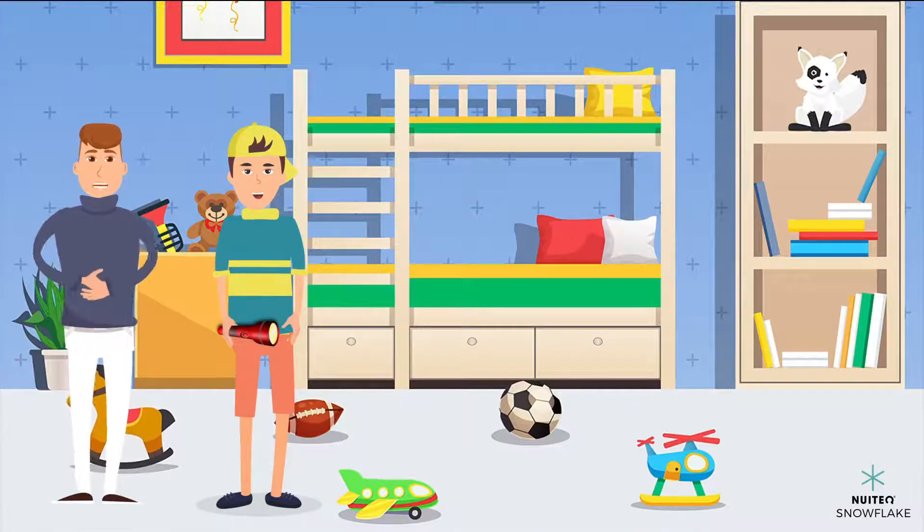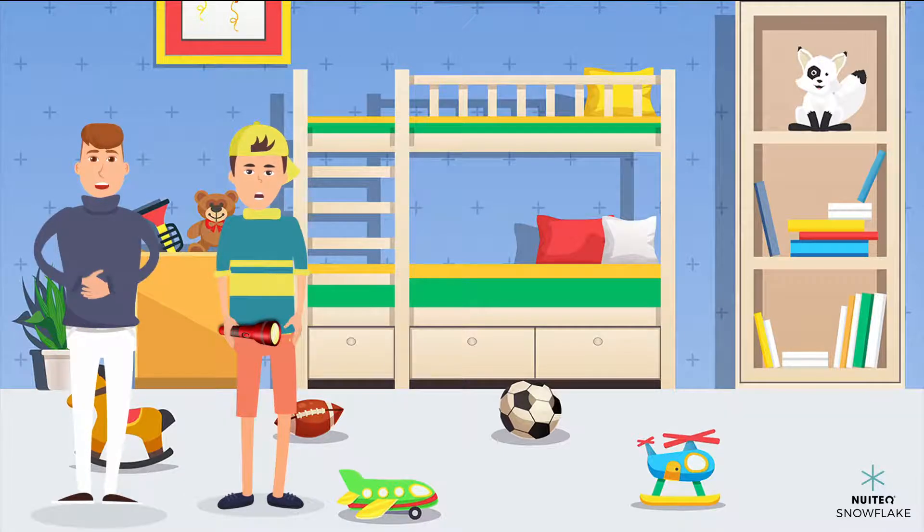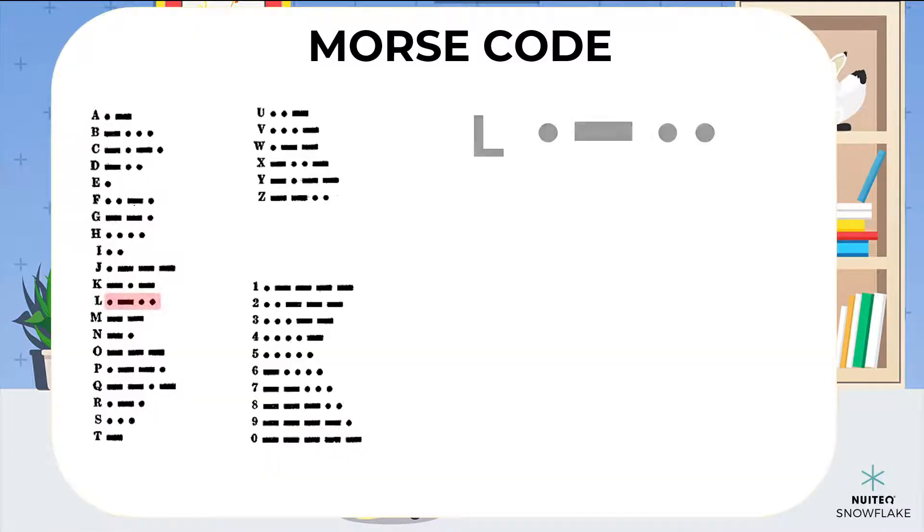Can you send the message Lucas to Laura in Morse code? Let's see. L would be one short signal, followed by one long one, and then two short ones.